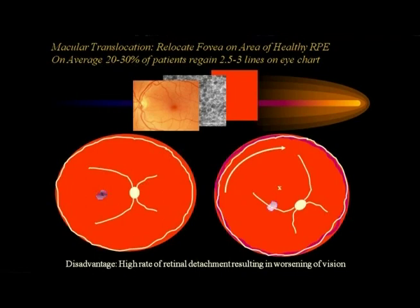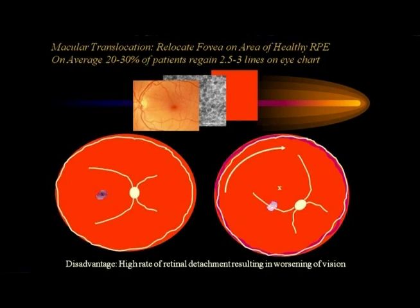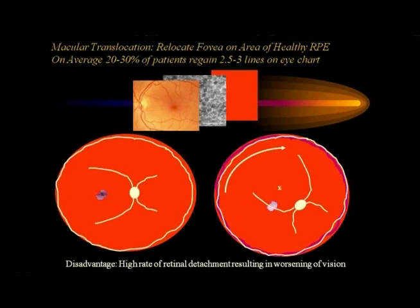We can get RPE cells from embryonic stem cells, but is there another way? One surgical procedure I used to perform is to cut the retina 360 degrees and just move it — moving the fovea, the part you read with, away from the area of bad RPE. This works in about 30% of patients, giving two and a half to three lines of vision. But because you've cut the entire retina, 20-30% of the time the retina detaches, leaving you with worse vision than you started. So the risks clearly outweigh the benefits.